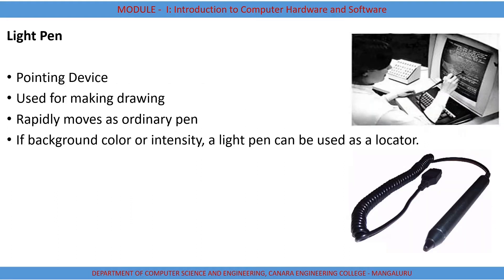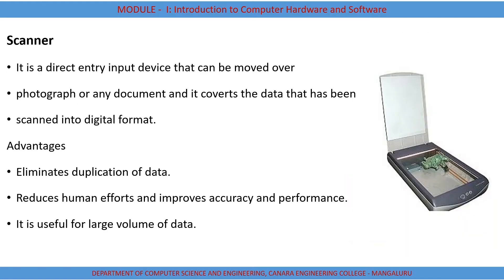Light pen is a pointing device used for making drawings. It uses a pen to locate particular data onto a computer. If the background color or intensity allows, a light pen can be used as a locator. Similarly, a scanner is used to scan documents. Whatever document you place on the device, it scans everything — taking the document in digital format and storing it in a computer. Advantages of using a scanner include: it eliminates duplication of data, reduces human effort, improves accuracy and performance, and is useful for large volumes of data.